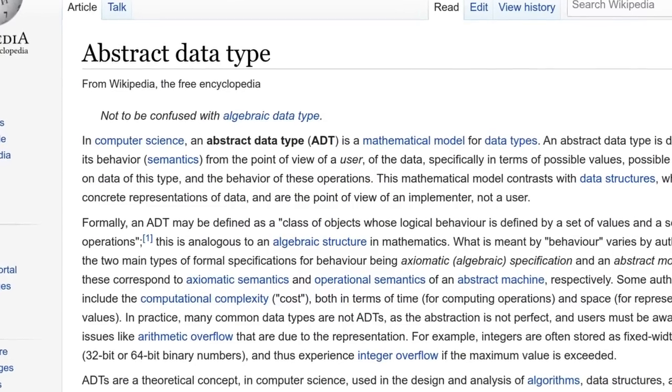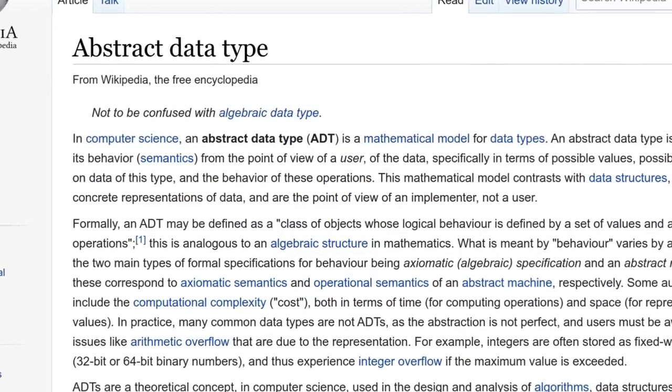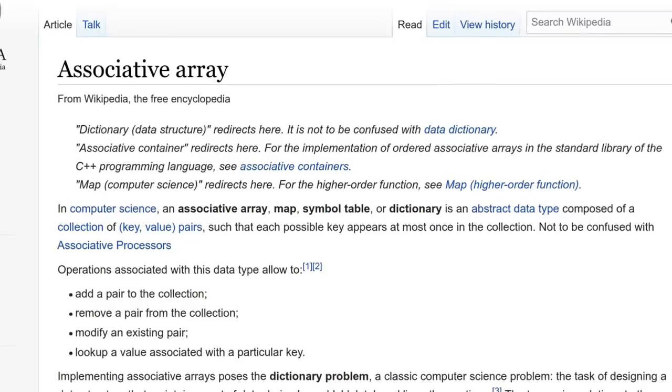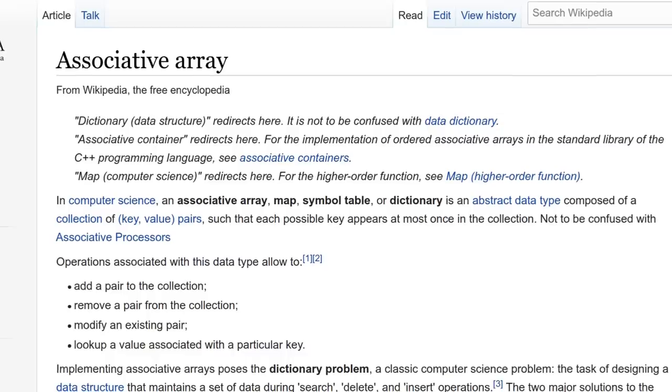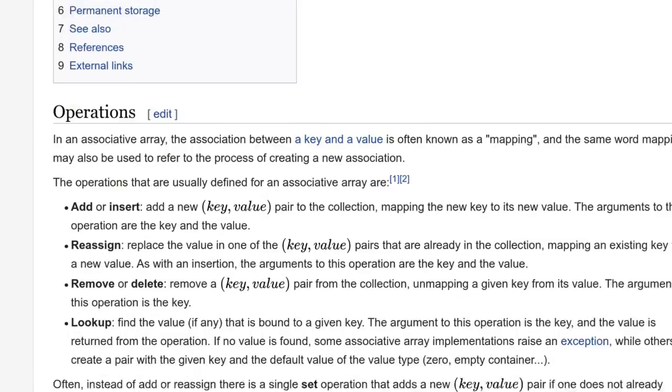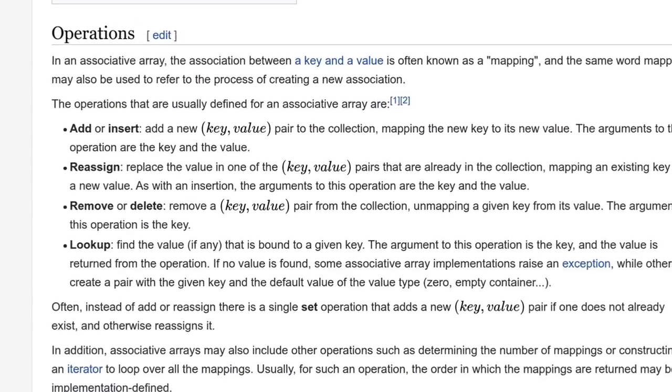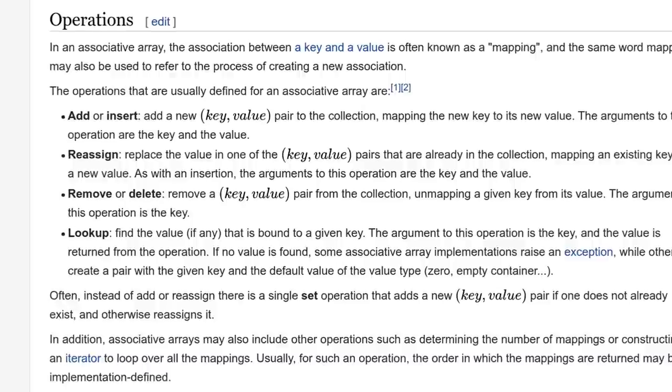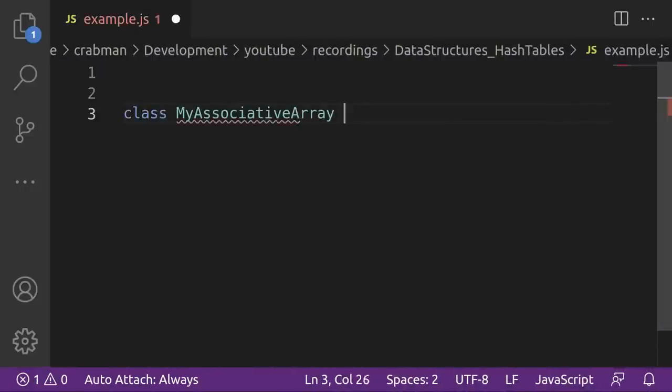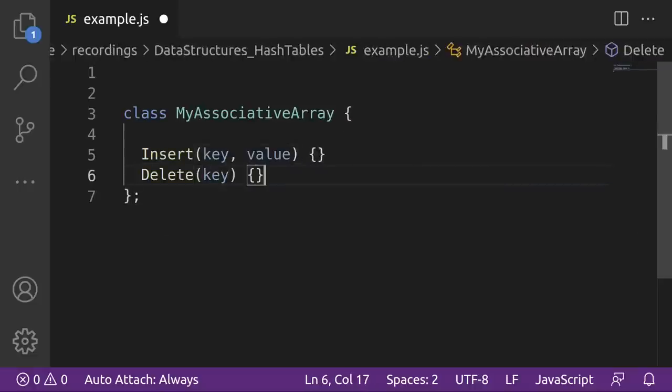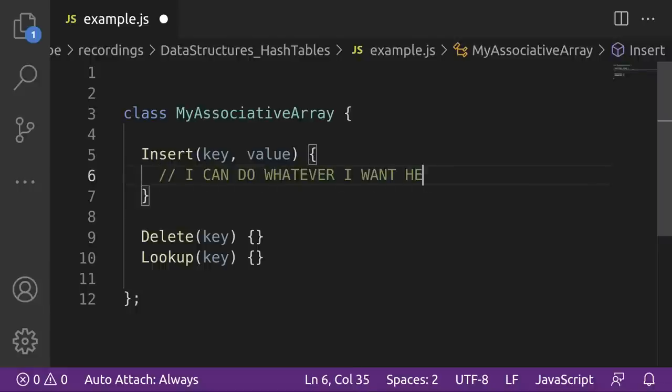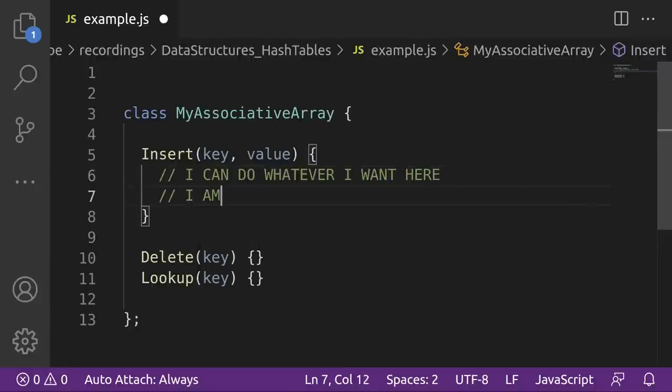So, there's something called an abstract data type, which is essentially an abstract description of how something is supposed to look and act. Like, if I look up an associative array, it's an abstract data type that defines precisely how they're supposed to work. You can see here, the operations are listed. You can add, reassign, remove, and look up items using keys or key-value pairs. But, it tells me nothing about how it's supposed to be implemented, like for realsies, using actual code. It only roughly tells me what operations should be available and the restrictions on them.